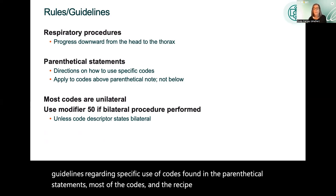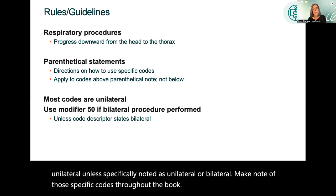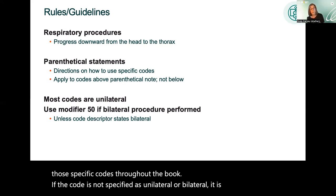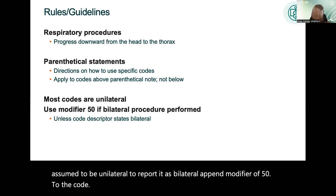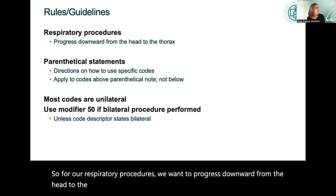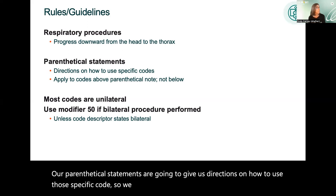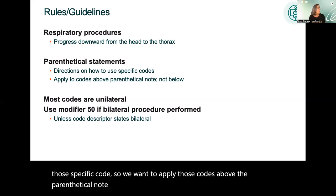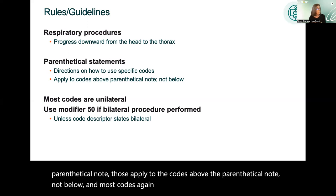Most of the codes in the respiratory section are considered unilateral, unless specifically noted as unilateral or bilateral. Make note of those specific codes throughout the book. If the code is not specified as unilateral or bilateral, it is assumed to be unilateral. To report it as bilateral, append modifier 50 to the code. Parenthetical statements give directions on how to use specific codes, and those statements apply to the codes above the parenthetical note, not below.